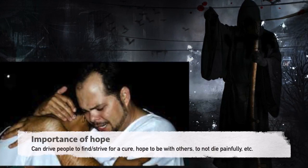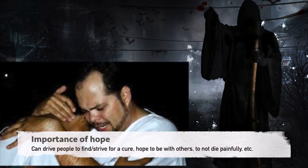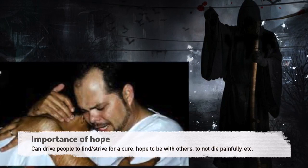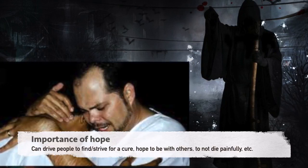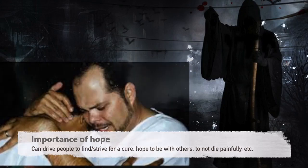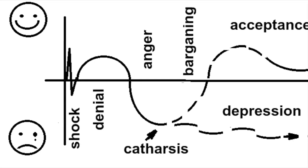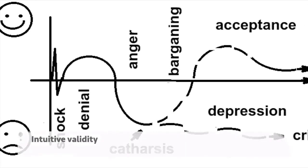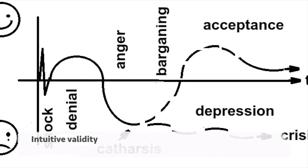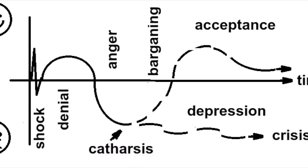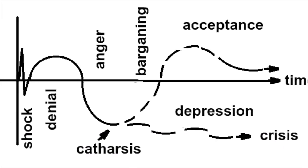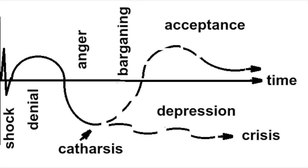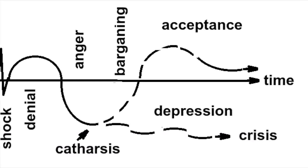There is an importance of hope during these five stages, because it can drive people to strive or find a cure, to hope the individual will not die painfully, or to hope to be with others during the individual's final days. There are some positive aspects of Kübler-Ross's theory. It sparked interest in the area of death, has intuitive validity in that people coming to grief feel these stages are happening to them, and it provides understandable structure for this complex process, helping caregivers attend to the emotional needs of patients and helping wider society engage with death.